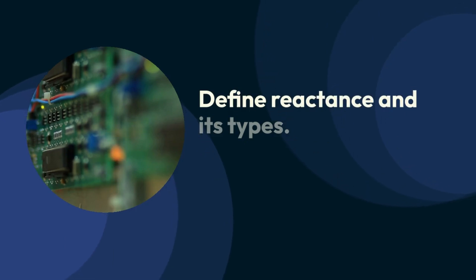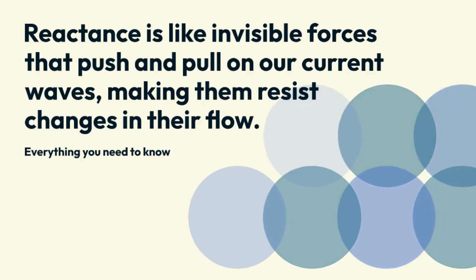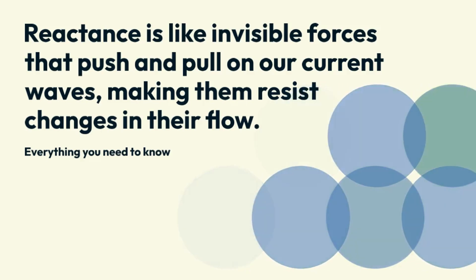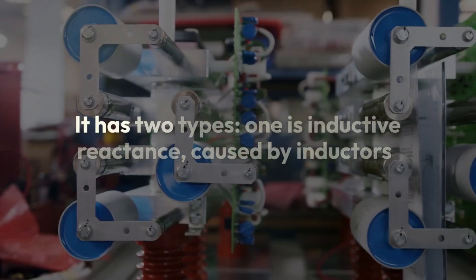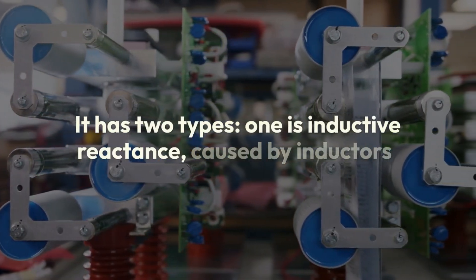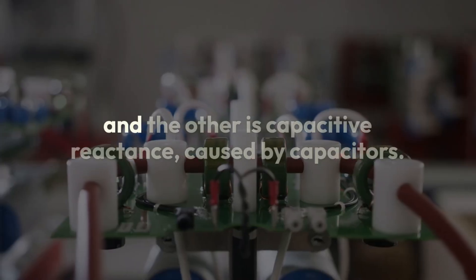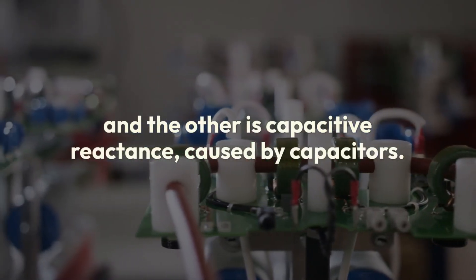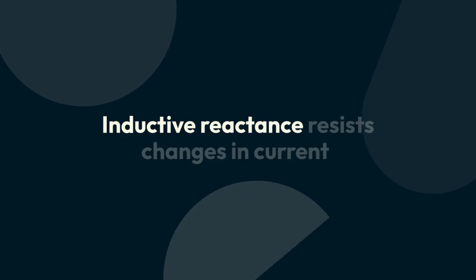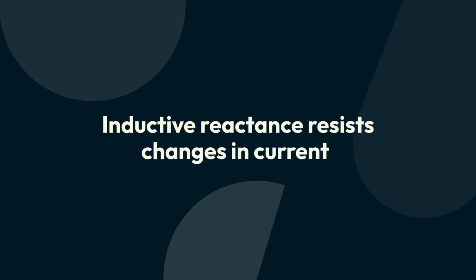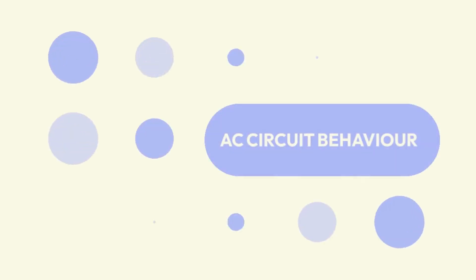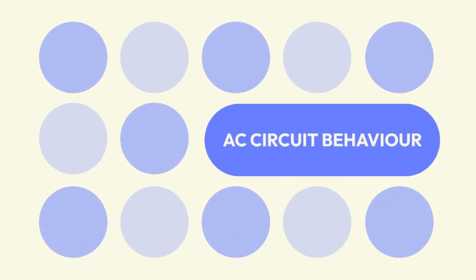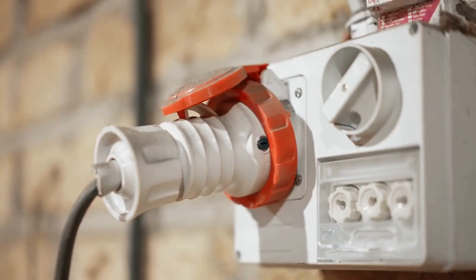Define reactance and its types. Reactance is like invisible forces that push and pull on current waves, making them resist changes in their flow. It has two types: inductive reactance, caused by inductors, which resists changes in current; and capacitive reactance, caused by capacitors. Both are crucial in understanding how AC circuits behave.